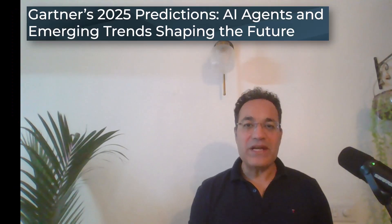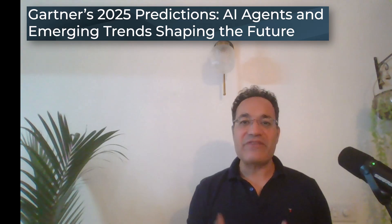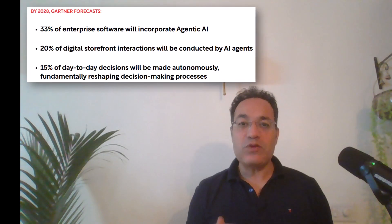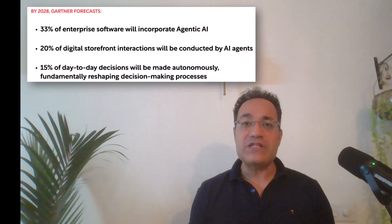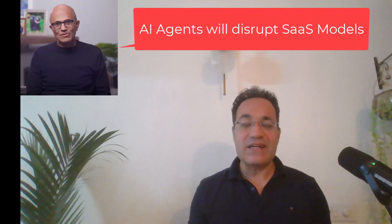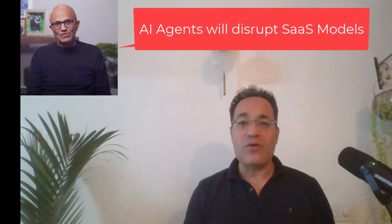Gartner predicts that 2025 is going to be the year of AI agents. By 2028, 30% of the applications are going to use AI agents in some form and shape. Satya Nadella recently in an interview highlighted that AI agents are going to kill the software as a service companies.